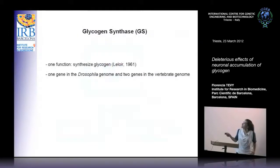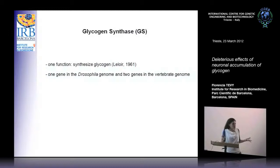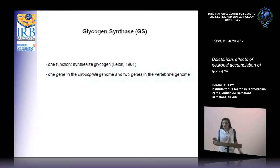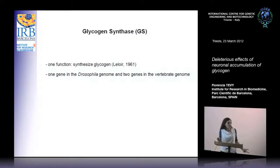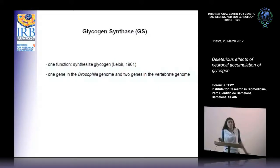The gene of interest is glycogen synthase, and this gene has only one known function: it synthesizes glycogen. In Drosophila, there is only one gene, while in vertebrates there are two isoforms — one is the liver isoform and the other is the muscle isoform, which is expressed in almost all tissues, including those of the brain.